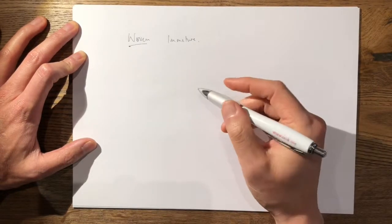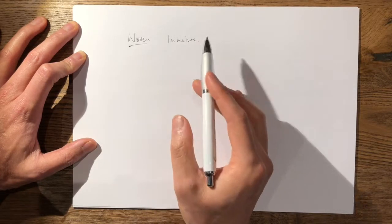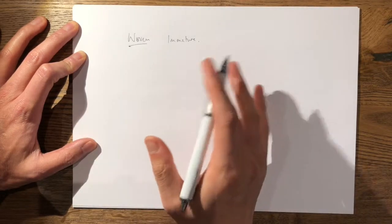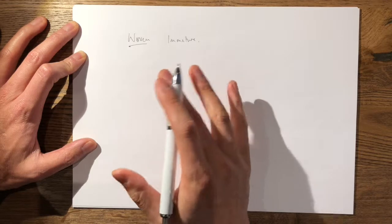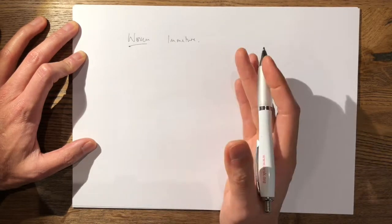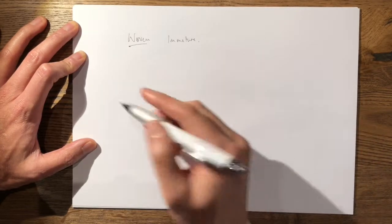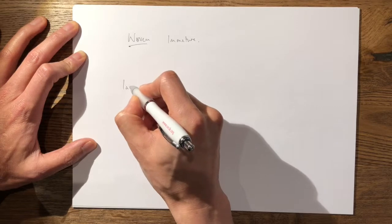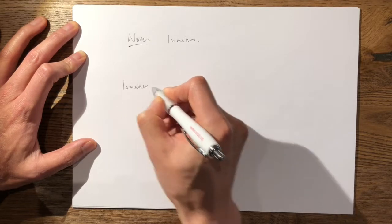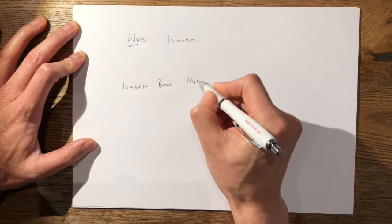Woven immature bone is purely an isotropic material, so it has the same biomechanical properties in whatever direction of force or load is placed upon it. Then you have your mature lamellar bone. Lamellar bone, which is mature, can consist of two types: either cortical or cancellous.